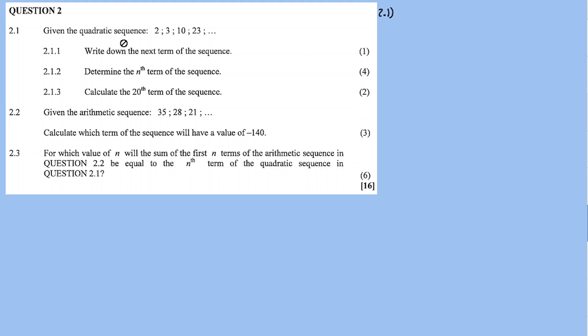For 2.1.1, we are given the quadratic sequence: 2, 3, 10, 23, going all the way to infinity. The question asks you to write down the next term of the sequence. Since it's a quadratic sequence, we find the second common difference.